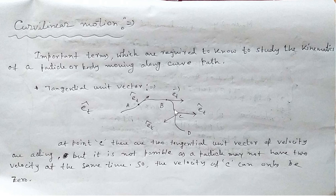Another way to understand this: the particle was moving in one direction first; at that point it changed direction. If we consider one direction as positive and the other as negative, it must pass through zero. For that reason, we take the velocity at that point as zero.